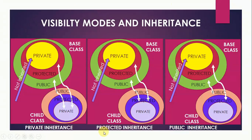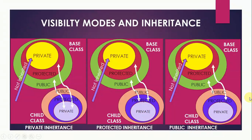Now suppose the type of inheritance is protected. In this case, the private members of the base class are not inherited. However, the protected members of the base class become the protected members of the child class, and the public members of the base class also become the protected members of the child class. Now if we talk about public inheritance, the private members are not inherited, the protected members of the base class become the protected members of the child class, and the public members of the base class become the public members of the child class. This is how all three types of inheritance work.